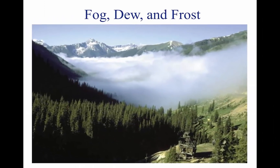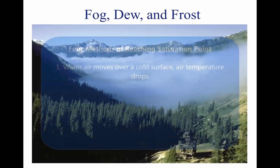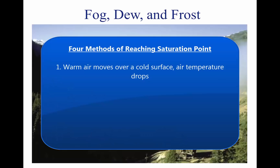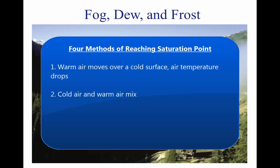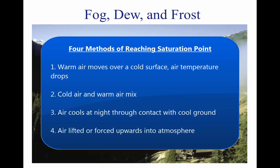If air reaches the saturation point while temperature and dew point are close together, it is highly likely that fog, low clouds, and precipitation will form. There are four methods by which air can reach the complete saturation point. First, when warm air moves over a cold surface, the air temperature drops and reaches the saturation point. Second, the saturation point may be reached when cold air and warm air mix. Third, when air cools at night through contact with the cooler ground, air reaches its saturation point. The fourth method occurs when air is lifted or forced upward in the atmosphere.